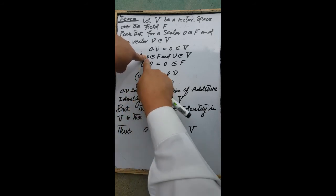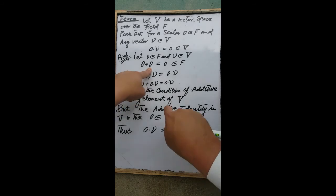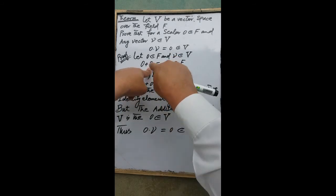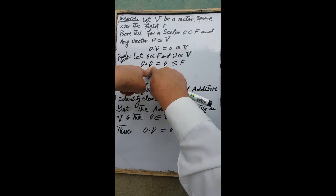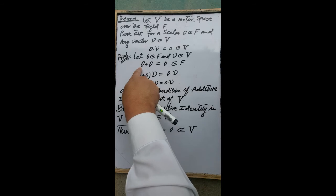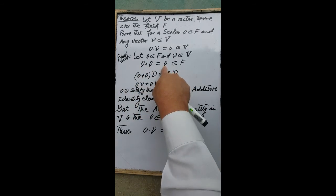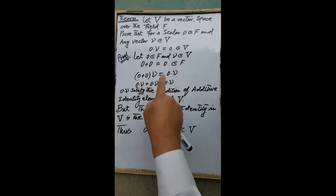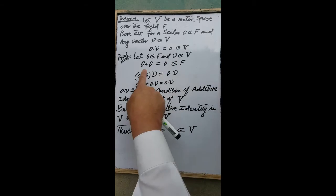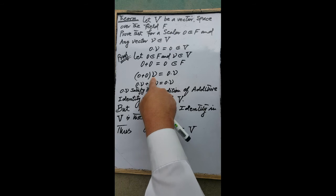for any scalar in F, including the zero scalar, there exists an additive identity element in the field F. By the property of the additive identity element, this scalar added with the additive identity scalar equals the zero scalar. When we multiply vector v to both sides of this equality, we have (0 + 0) multiplied by v is equal to 0 multiplied by v.